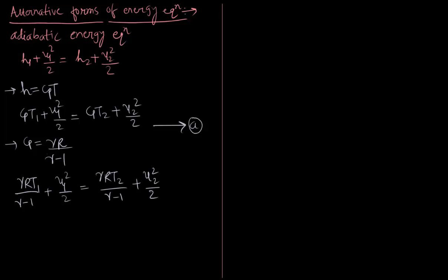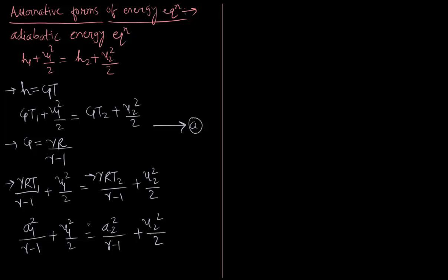Now, recognizing that γRT1 equals a1² and γRT2 equals a2², our equation finally becomes a1²/(γ−1) plus u1²/2 equals a2²/(γ−1) plus u2²/2. Let us call this equation number B.